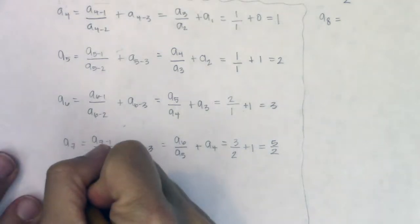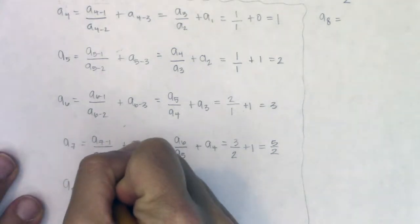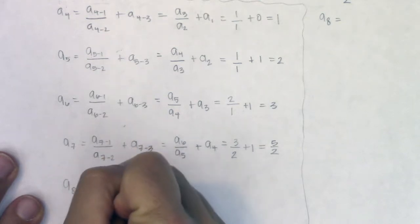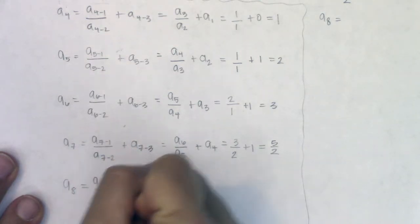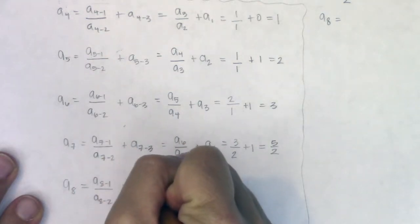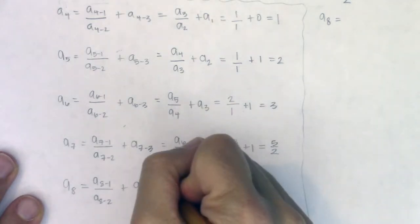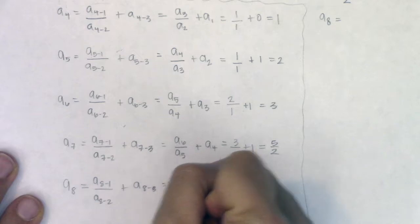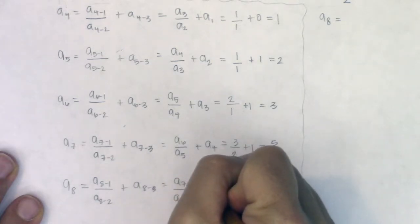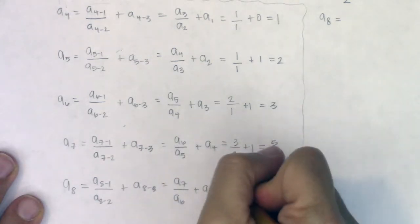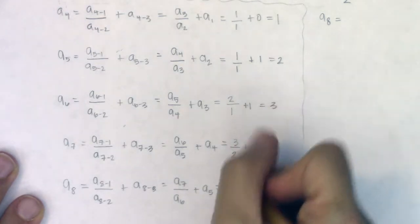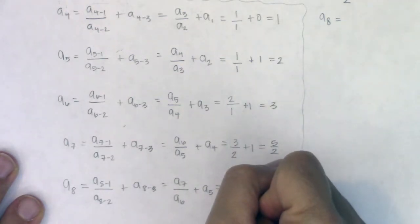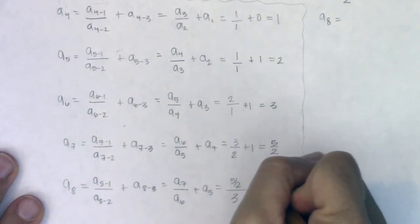So if I go to do a sub eight, that would be a sub eight minus one in ratio to a sub eight minus two. And I need to add on to it a sub eight minus three. So this is a sub seven over a sub six plus a sub five. A sub seven was five halves. A sub six was three. And a sub five was two.